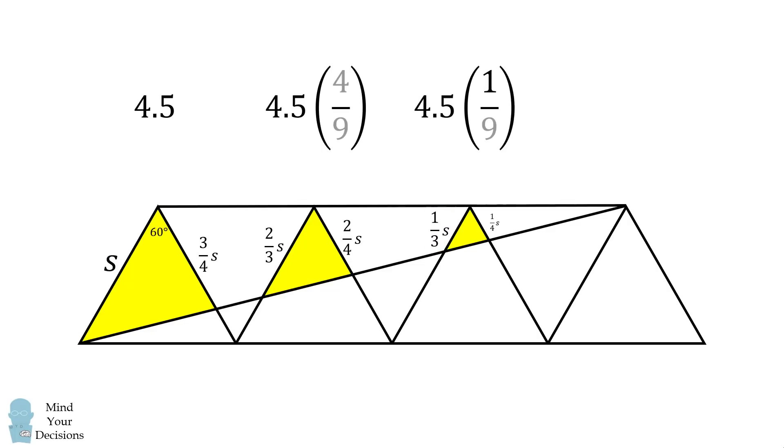We can thus calculate the area of each triangle. Once we do that, we add up these areas, and we get the answer is equal to 7.